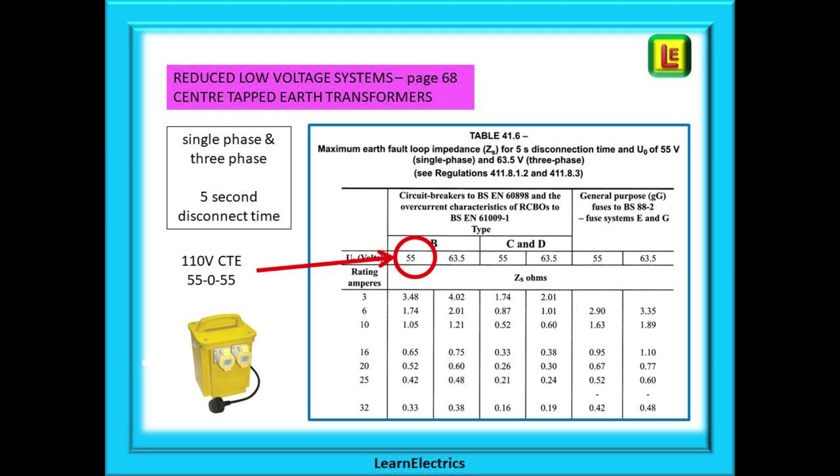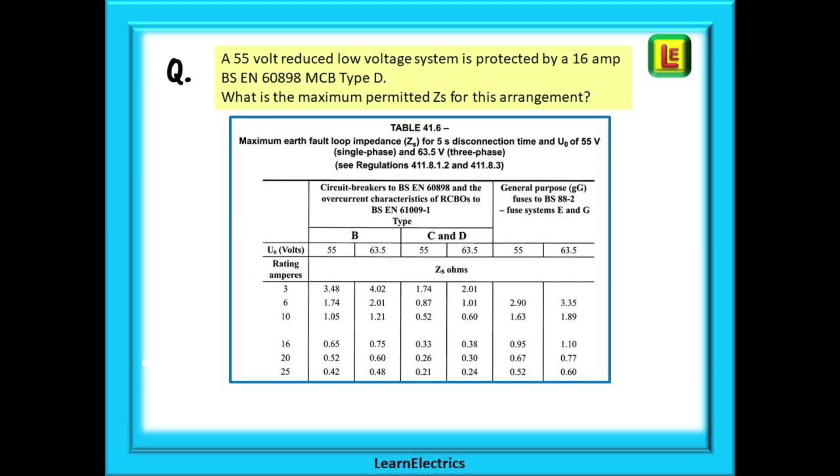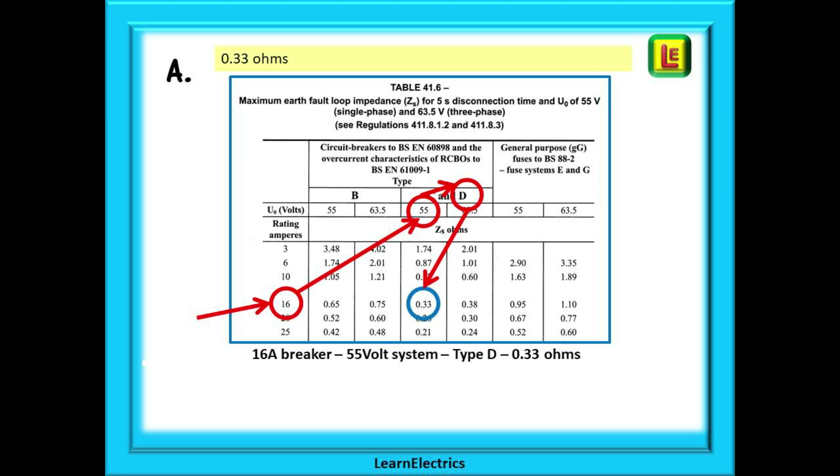Disconnection time is now five seconds and this table works for single phase or three phase. We can show you the table in action with a typical exam question. If the question is that a 55 volt reduced low voltage system is protected by a 16 amp BS EN 60898 MCB type D, what is the maximum permitted ZS for this arrangement? The question actually leads you through the table to the correct answer. The hardest part is finding the table so remember where it is. Page 3 contents tells us 'protection against electric shock page 55.' Scan down page 55, Chapter 41 contents page, and 13 lines down we find 411.8 reduced low voltage systems. It couldn't be easier to find so follow the question. 16 amps for the breaker size, 55 volts, type D, and the blue circle shows 0.33 ohms and there is the answer.